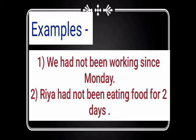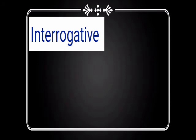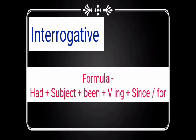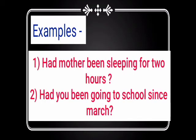For interrogative sentences, write 'had' in the beginning. The structure will be: Had + subject + been + verb with -ing + since or for. Examples: Had mother been sleeping for 2 hours? Had you been going to school since March?